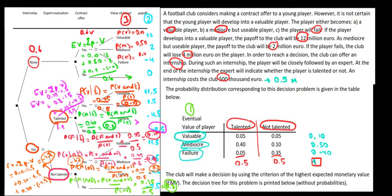We contrast this with the other option: investing in the internship but not giving him any contract. If we don't give him a contract, we just have the fixed internship investment of 500,000 euros, a loss of minus 0.5. But a 500,000 euro loss is better than losing 1.7 million, so we're better off not giving the contract. The expected value of a not-talented player is therefore minus 0.5.